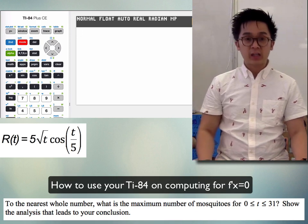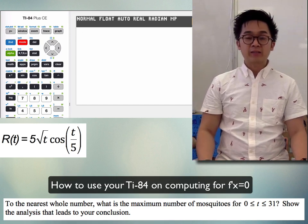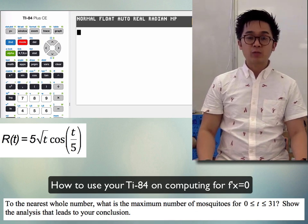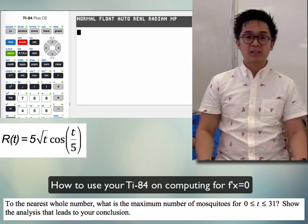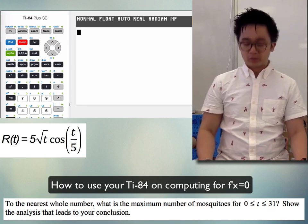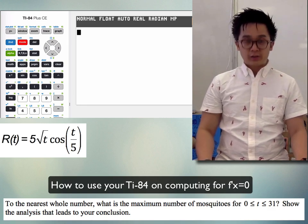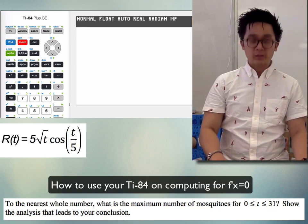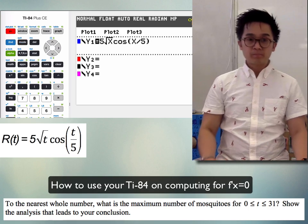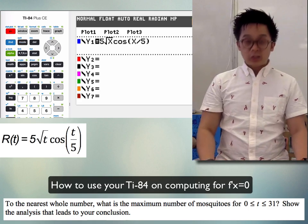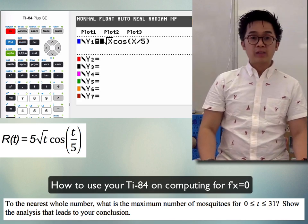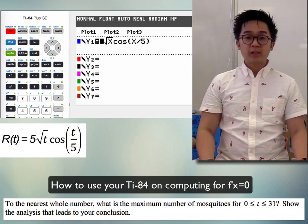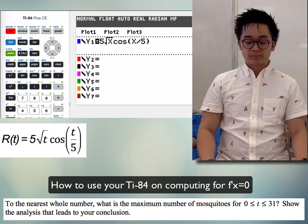What we can do is use our TI-84, graph our function, and see where it intersects the x-axis, or where y equals 0. Going back to Y=, Y₁ is our r(t) or the derivative function.